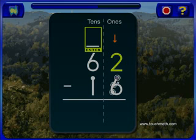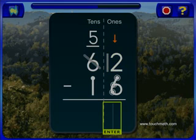2, 1, 0. If you cannot count all of the touch points, you must regroup. 2, 1, 0, 12, 11, 10, 9, 8, 7, 6.